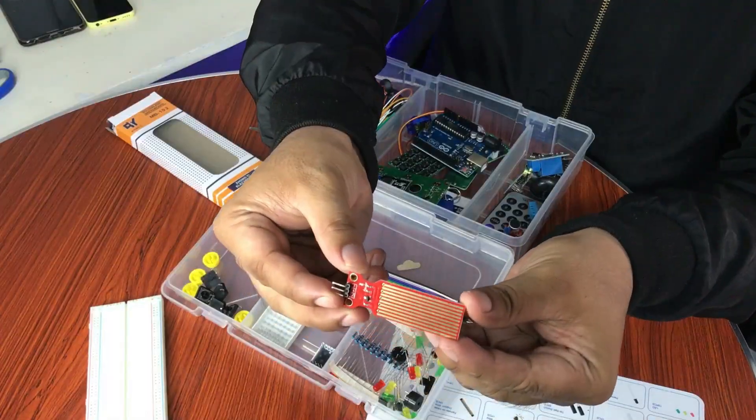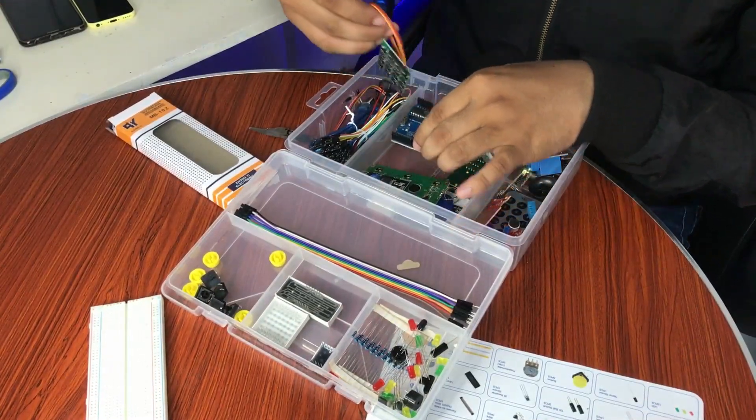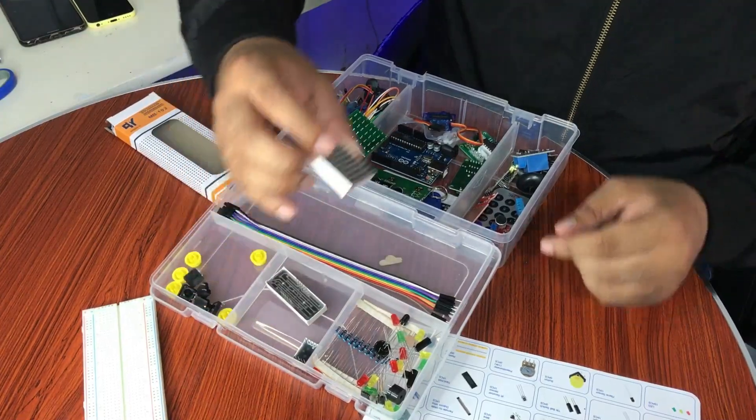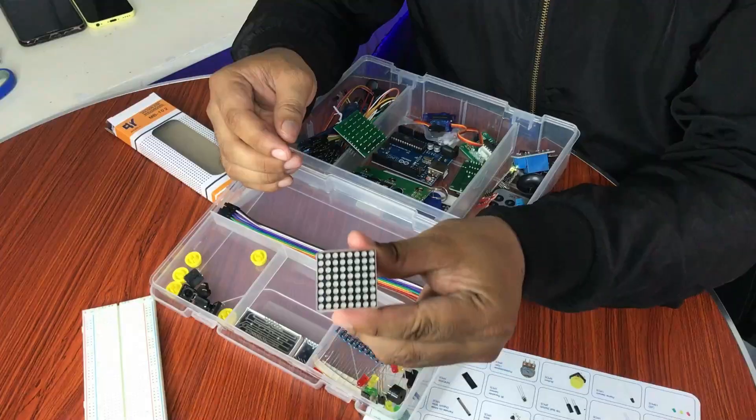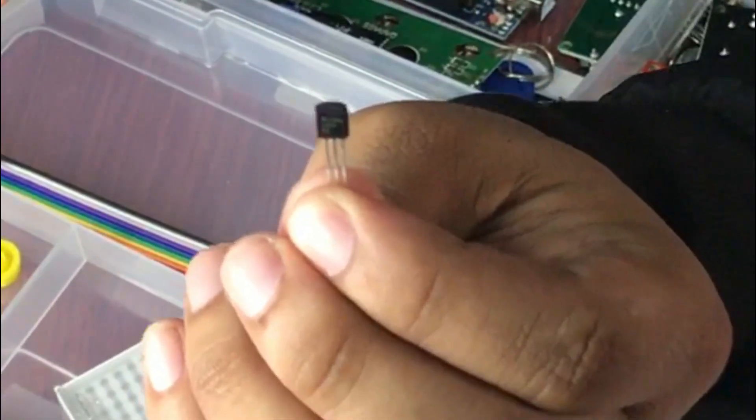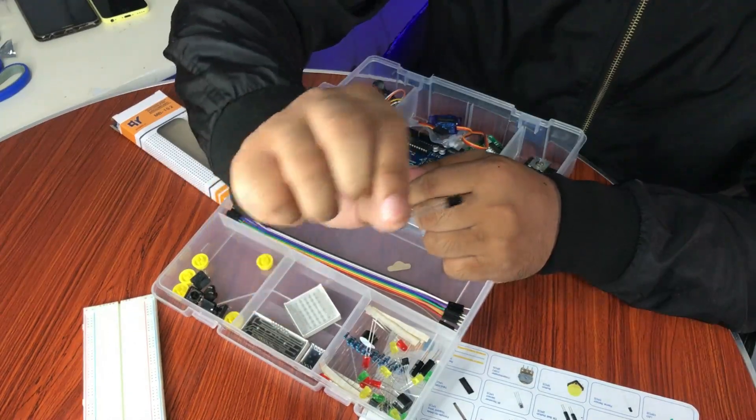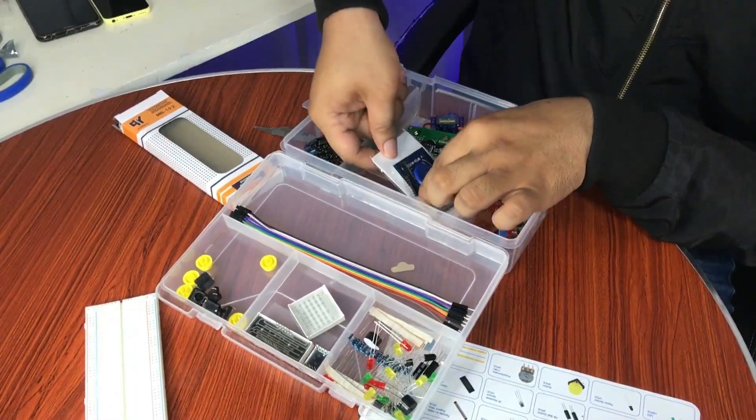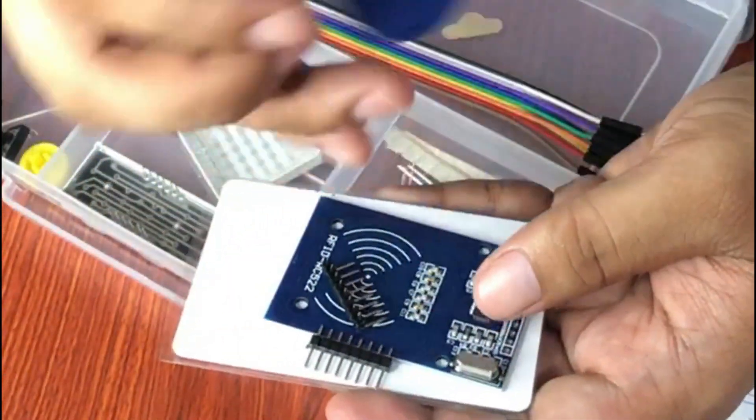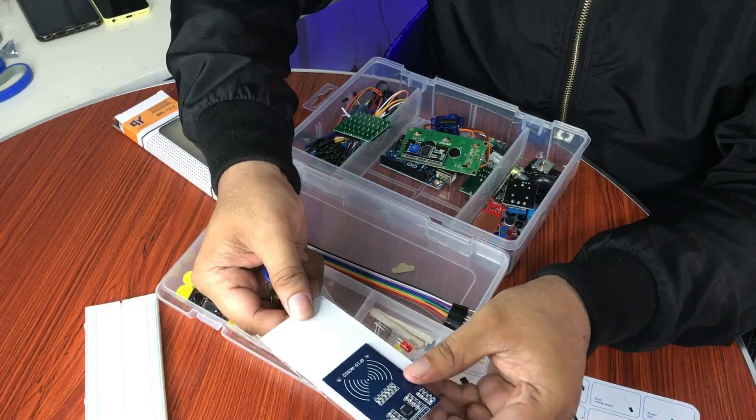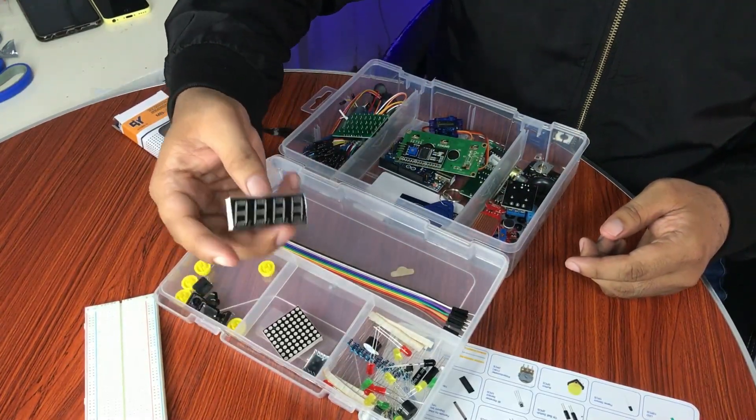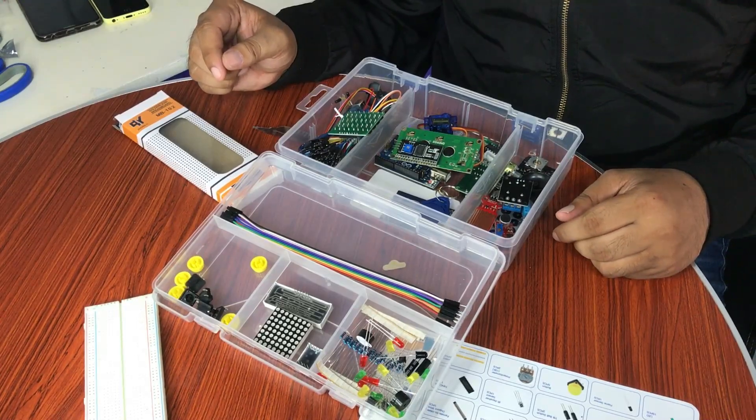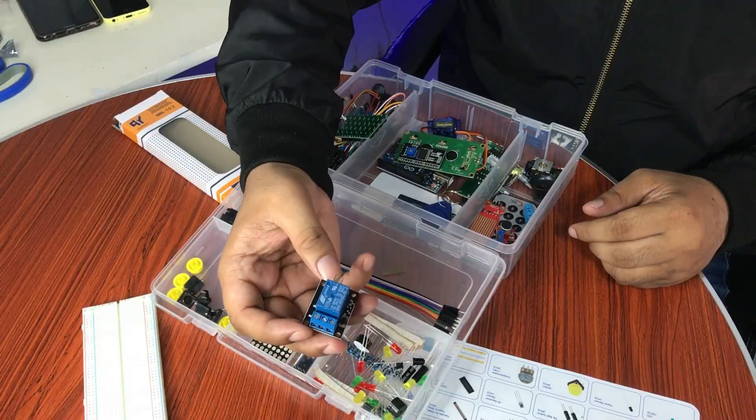Servo motor, the SG90 servo motor, so this is the SG90 servo motor. Matrix tube is this one, the matrix tube. LM35, the flame sensor, the RFID module, so this is the RFID module looks like this one with the card and sensor. Four digit seven segment, so this is the four digit seven segment LED display. One channel relay module, this is the one channel relay module.